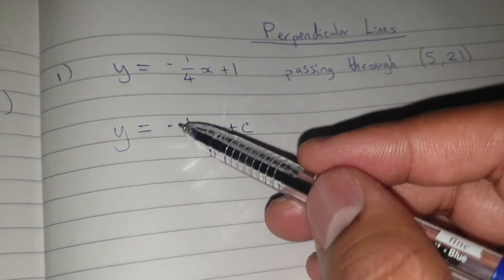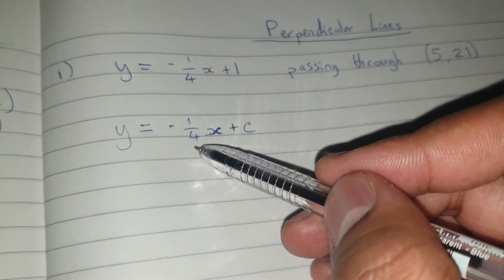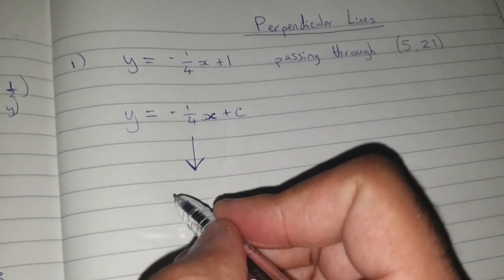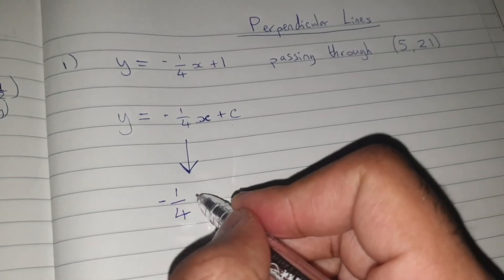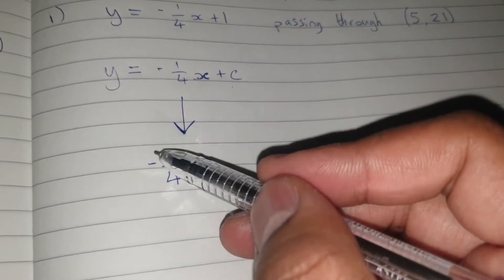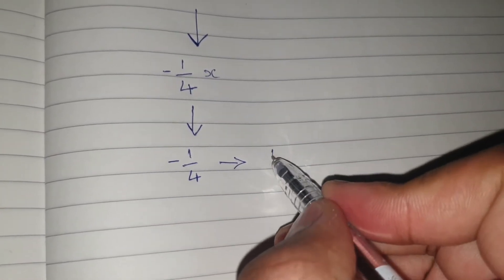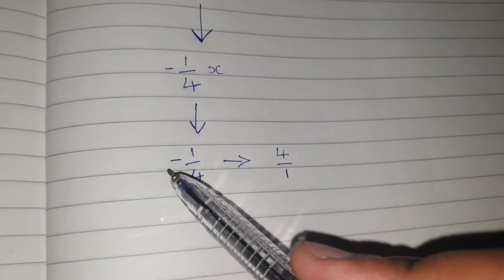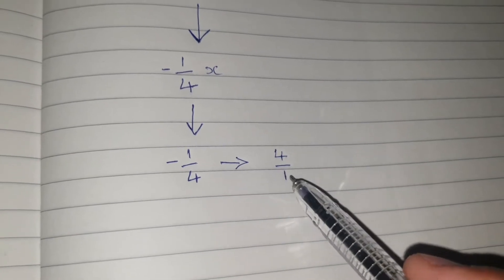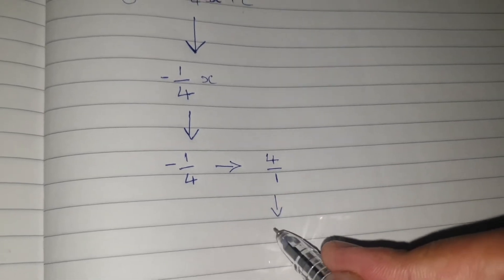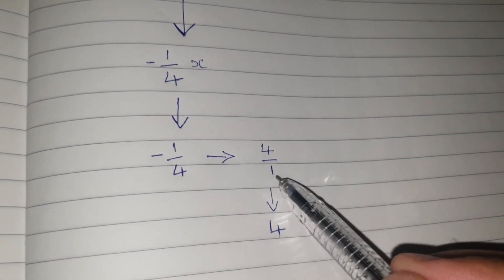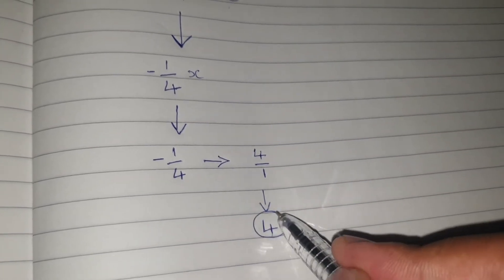Now that we've got the gradient, we can find the negative reciprocal of this number. The gradient is negative one quarter. The negative reciprocal of one over four is basically four over one. And because the original is negative, this stays as a positive. Now four over one is exactly the same as the number 4, because 4 divided by 1 equals 4. So our gradient for the perpendicular line is going to be 4.